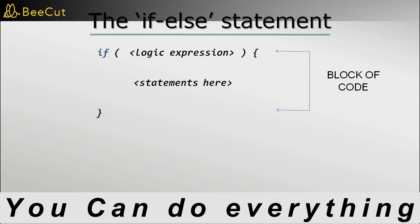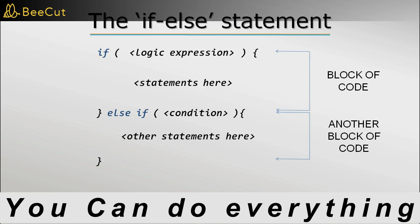Sometimes there may be more than one condition, each condition executing a different block of code. And for that, we can add another if else block of code. So after the if, we can write another logic expression or condition, which if true will execute this block of code. And we can have more than one such if else's. And finally, it ends with an else. And the else block of code will get executed when none of the above conditions are true.